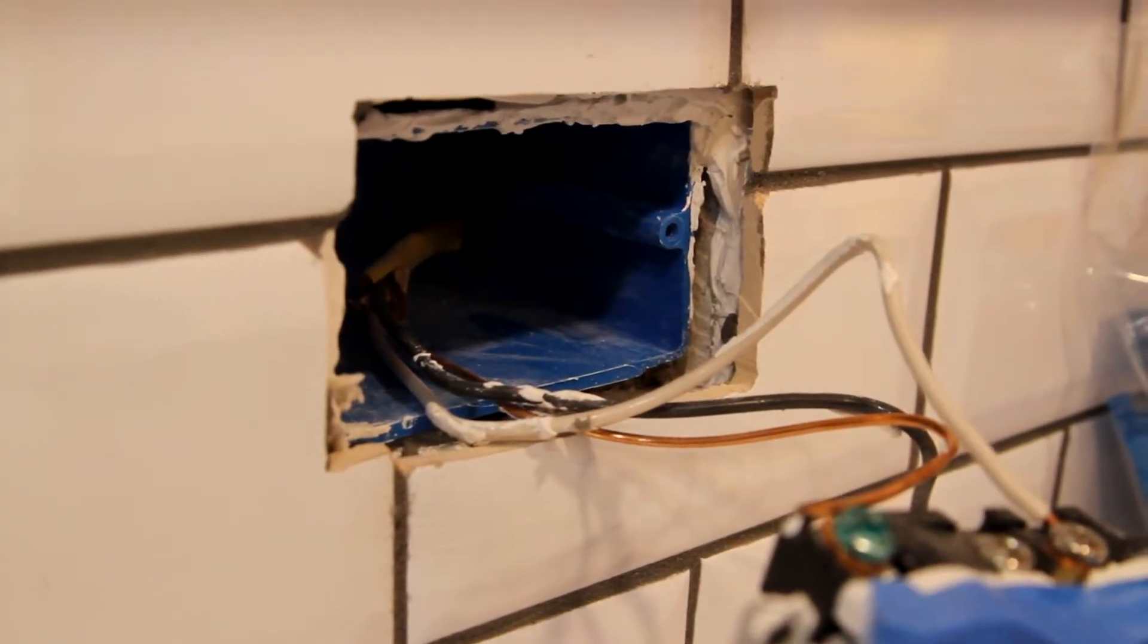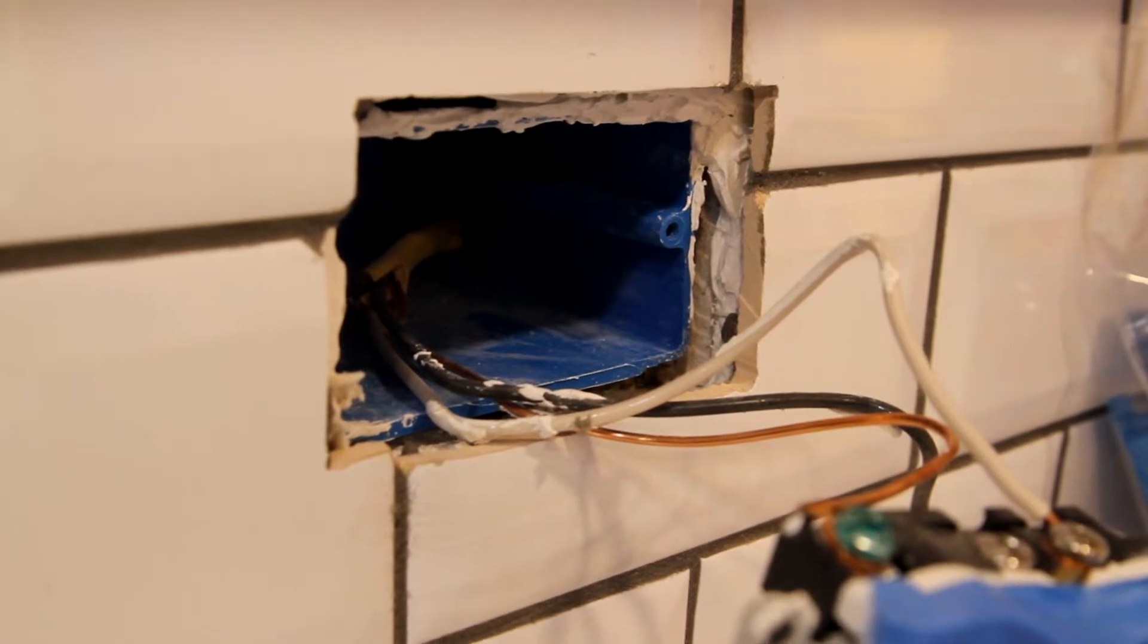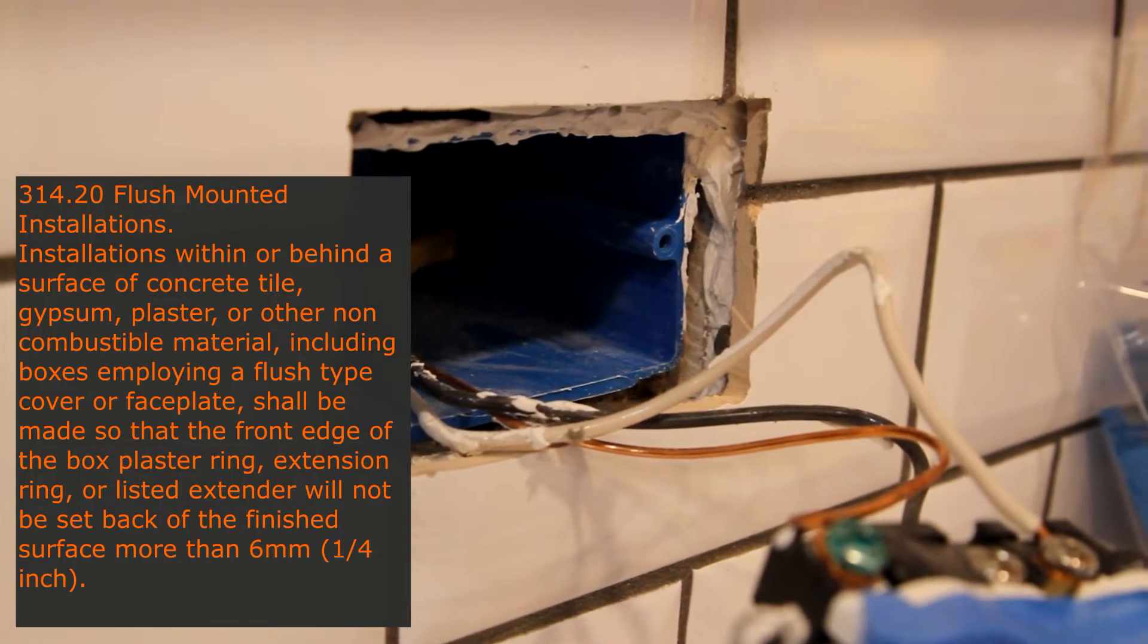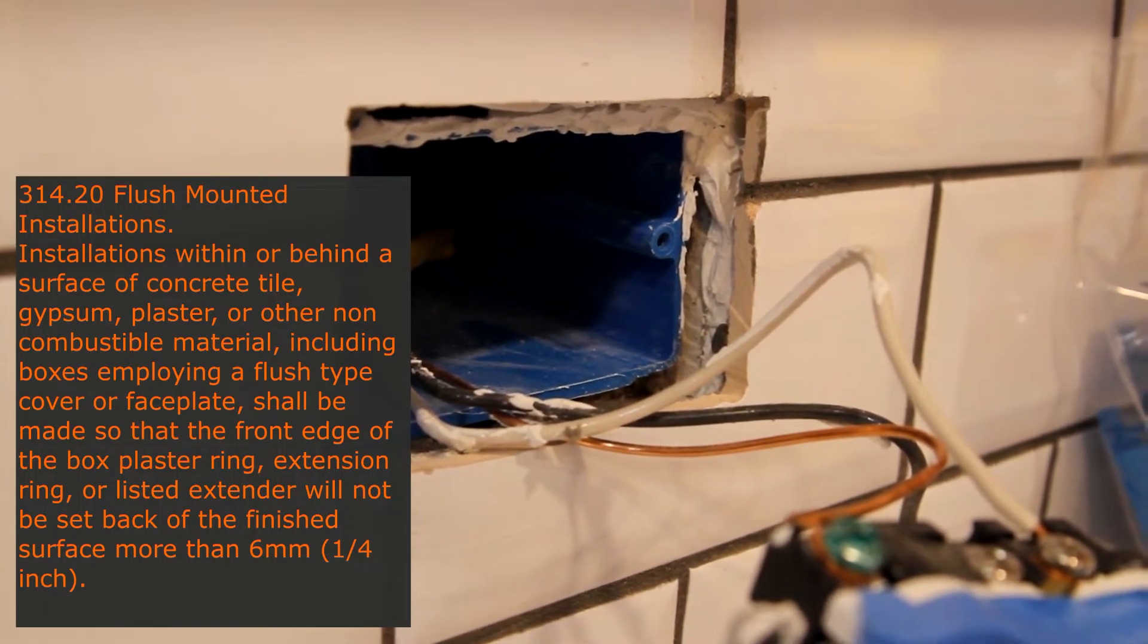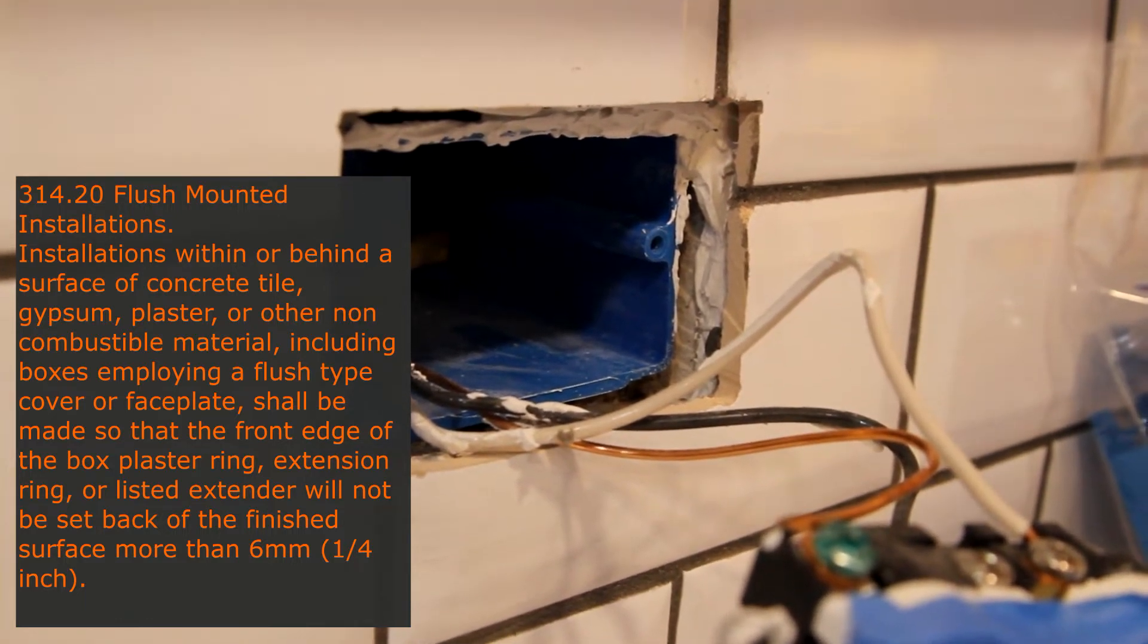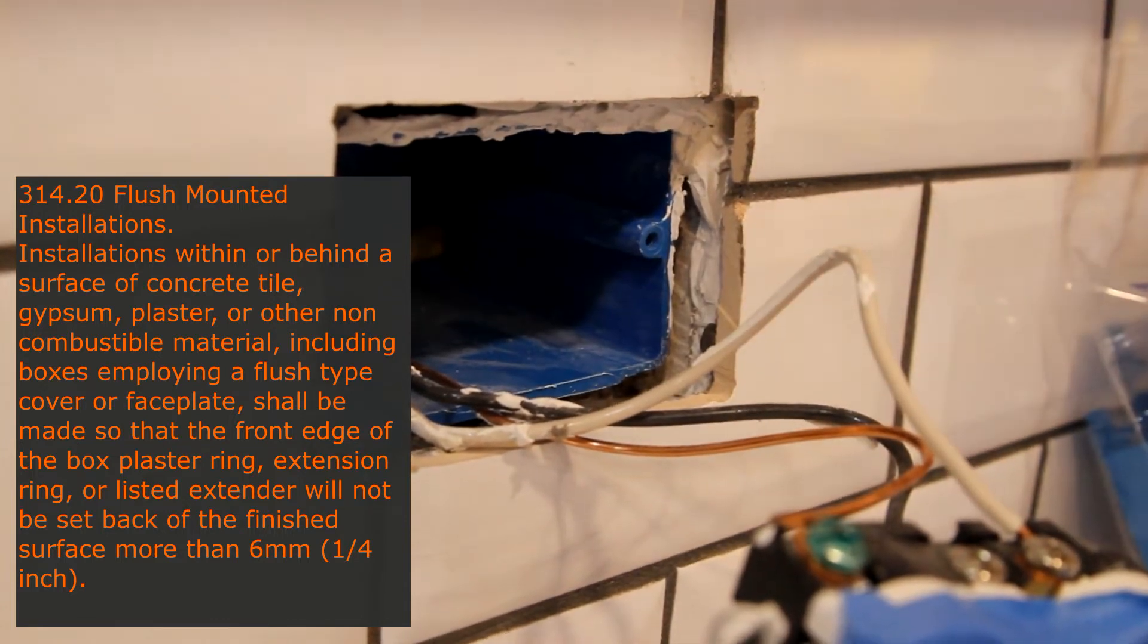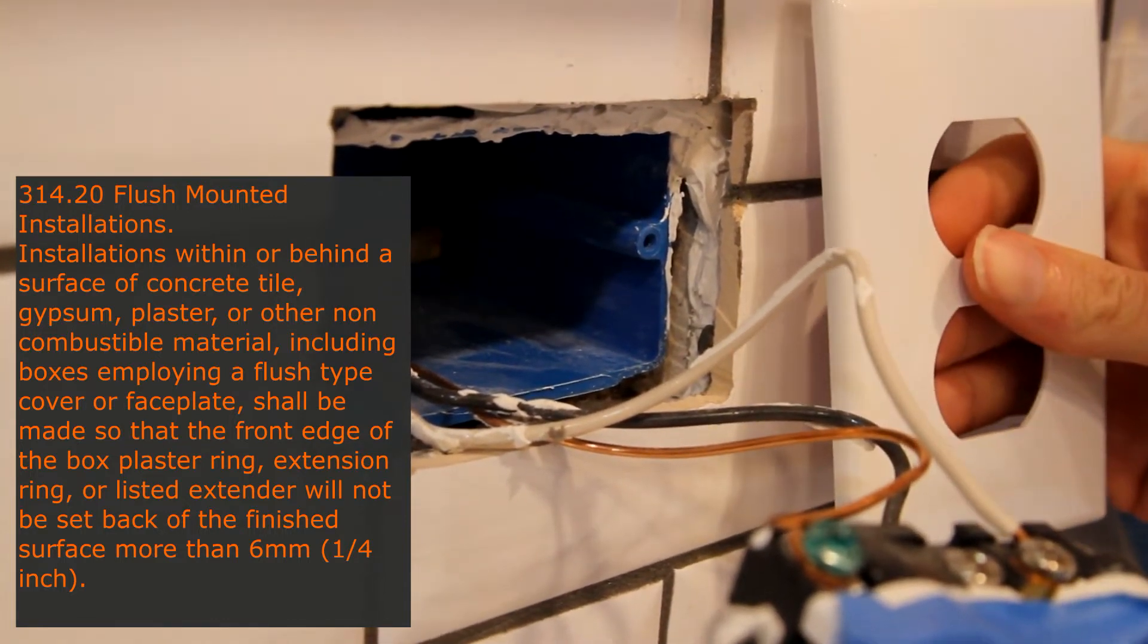So right here we're looking at what is probably the most common National Electrical Code violation. NEC code 314.20 says that you can have no more than one quarter of an inch between this box and this outer surface, which in this case would be the outlet box cover.